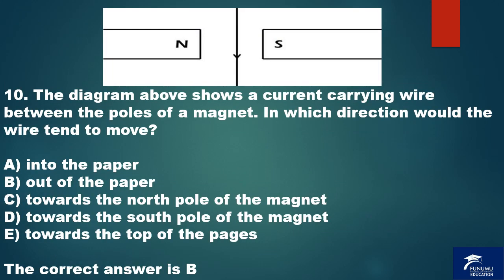Question 10. The diagram above shows a current carrying wire between the poles of a magnet. In which direction would the wire tend to move? A. Into the paper. B. Out of the paper. C. Towards the north pole of the magnet. D. Towards the south pole of the magnet. E. Towards the top of the pages. The correct answer is B.